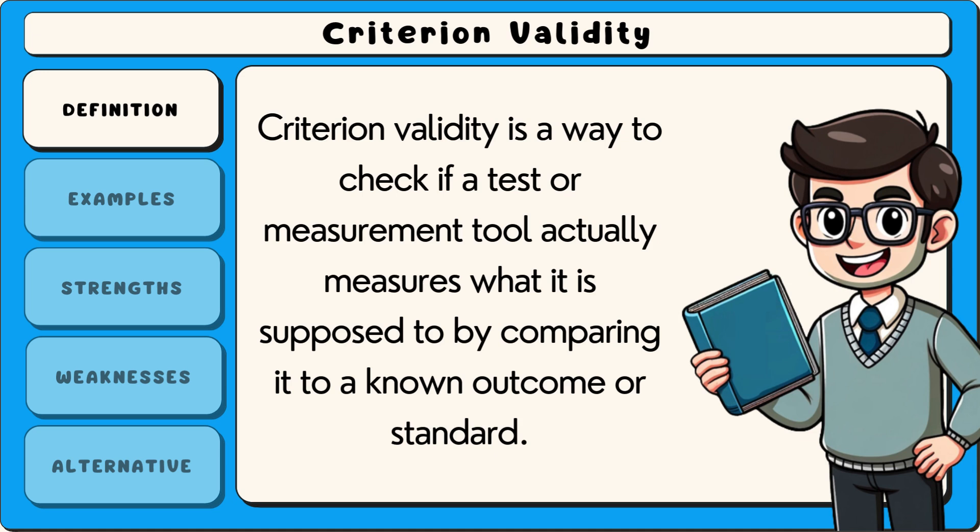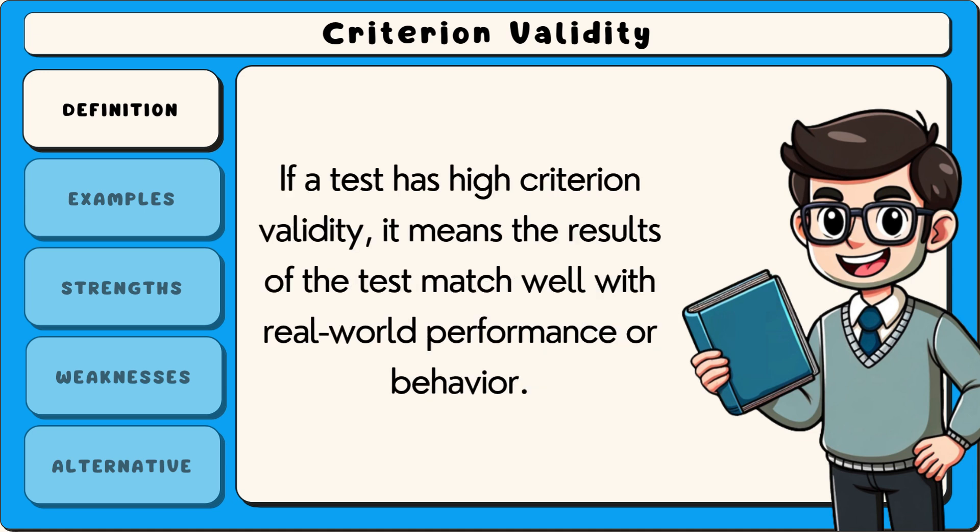Criterion validity is a way to check if a test or measurement tool actually measures what it is supposed to, by comparing it to a known outcome or standard. If a test has high criterion validity, it means the results of the test match well with real-world performance or behaviour.